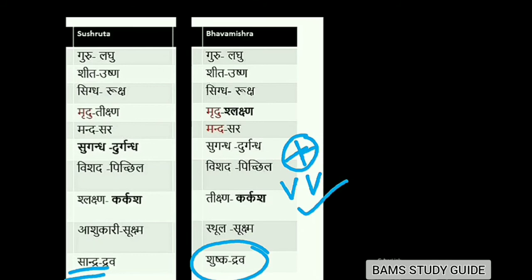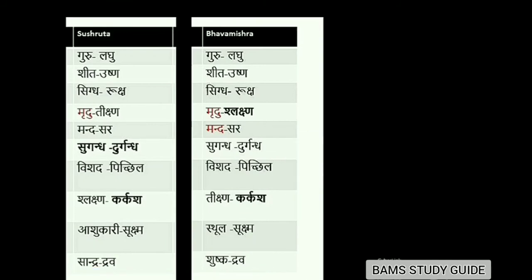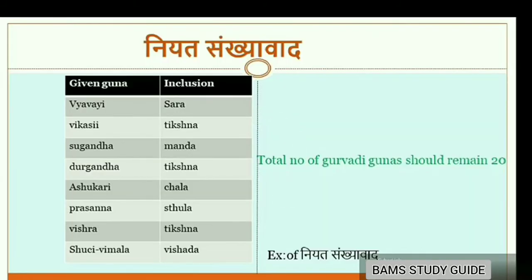Like Sushruta, Bhavmishra also mentioned Vyavai and Vikasi Gunas. He interchanged the places of Slakshna and Mridhu from Sushruta's arrangement — making the opposite of Mridhu as Slakshna, and the opposite of Tikshna as Karkasha. Some authors correlated newer qualities mentioned by Sushruta and Bhavprakasha with traditional qualities mentioned by other authors, to sort out confusions and controversies related to the names and pairing of Gunas.